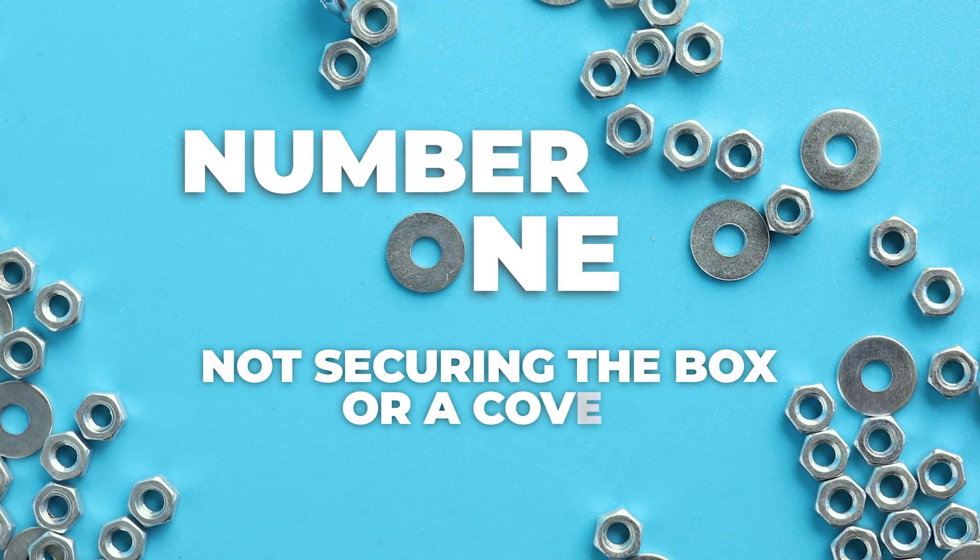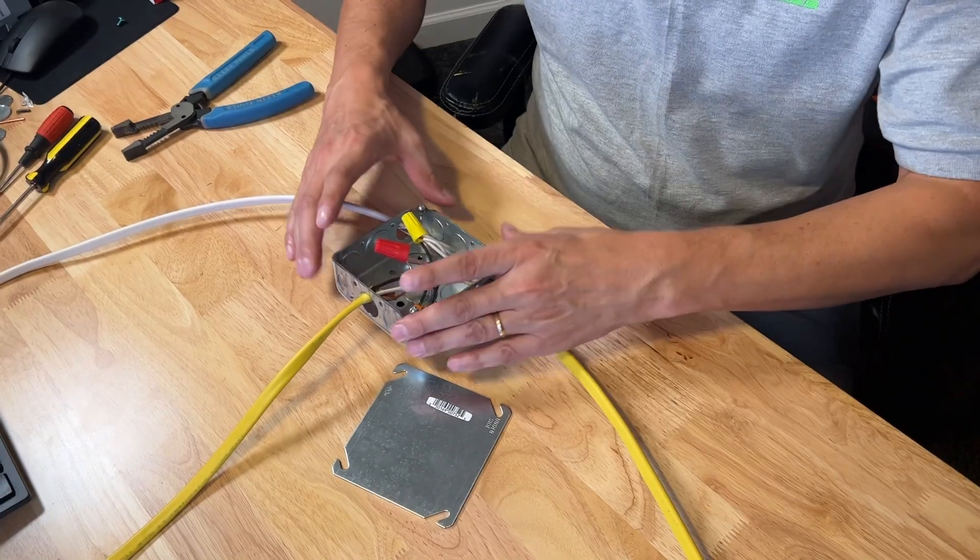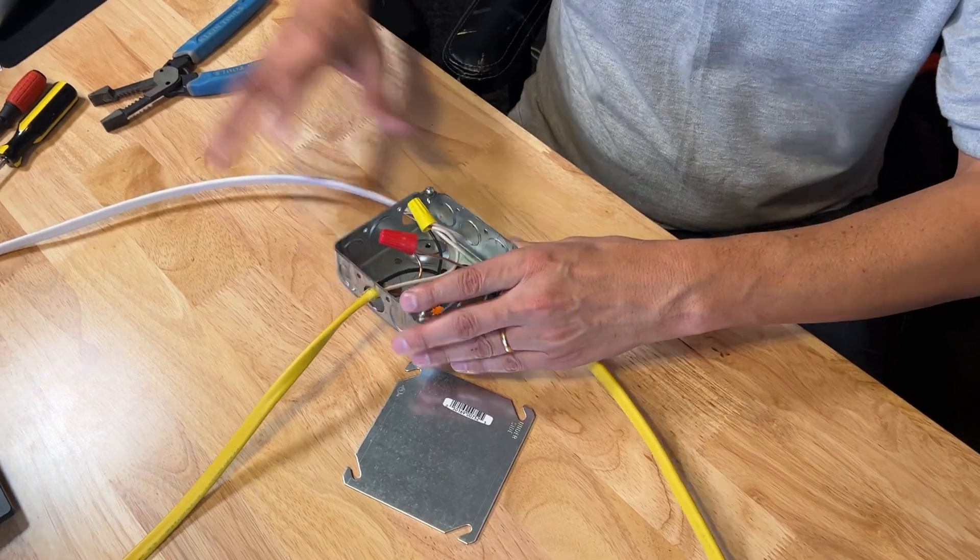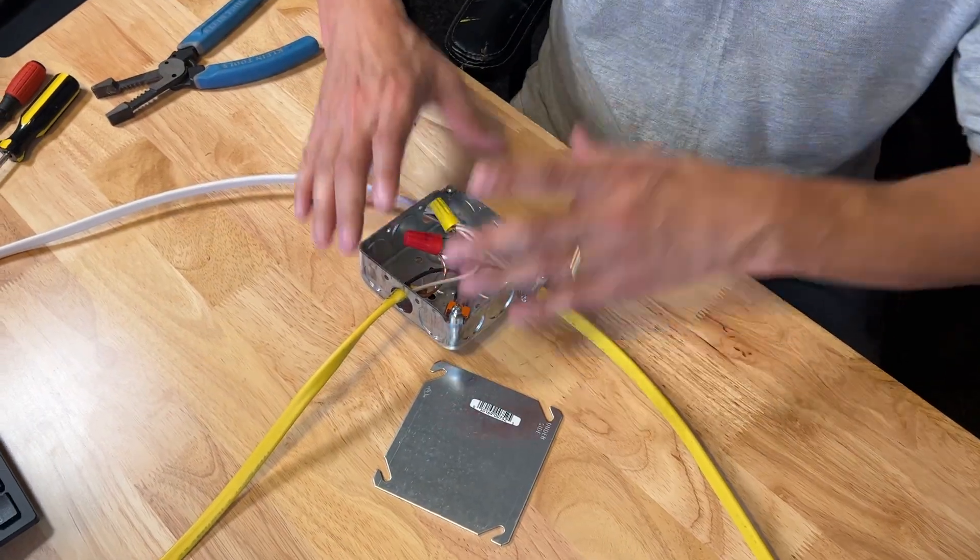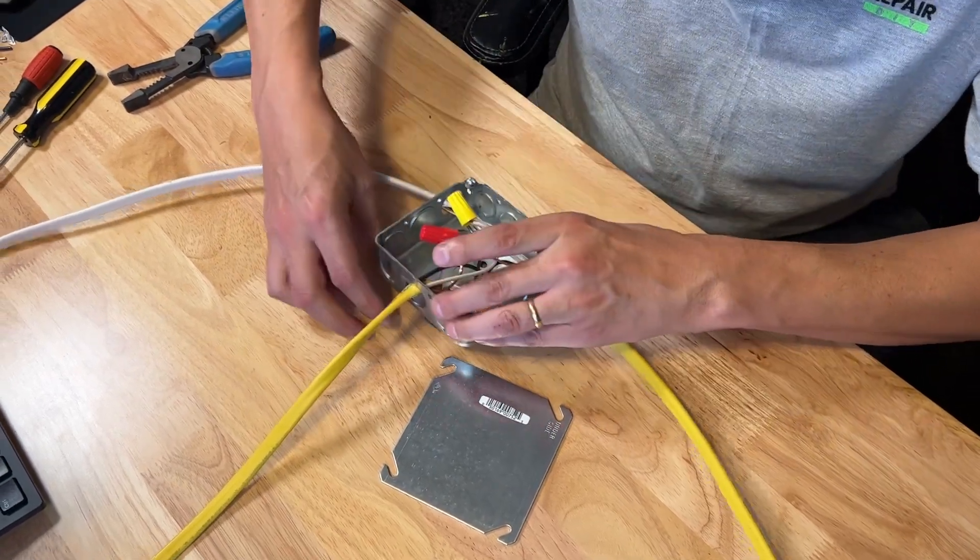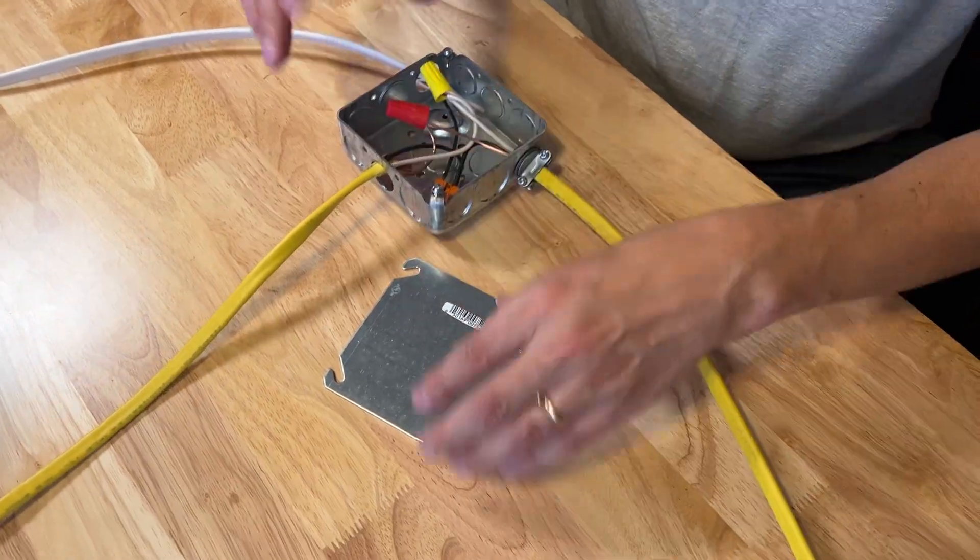Number one, not securing the box or a cover. So your electrical boxes, whether plastic or metal, but metal is far superior, far stronger, will last longer. And you definitely want metal if you're installing something heavy, like a ceiling fan, but they are required to be fastened. So they have to be screwed down and fastened to wood framing. So remember to screw your boxes down.